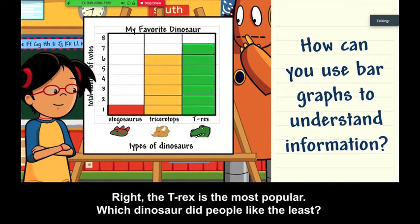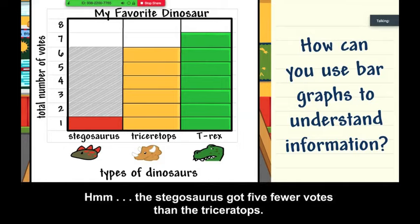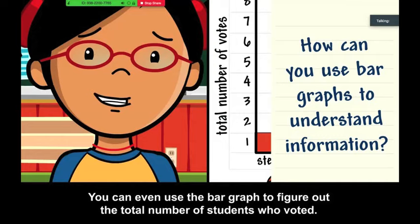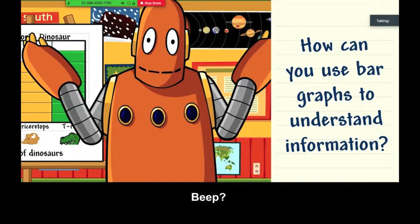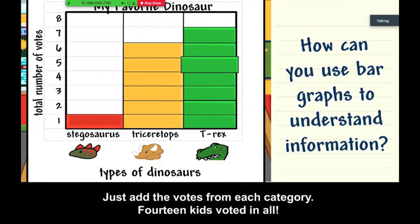Which dinosaur did people like the least? Hmm, the Stegosaurus got five fewer votes than the Triceratops. You can even use the bar graph to figure out the total number of students who voted. Just add the votes from each category. Fourteen kids voted in all.